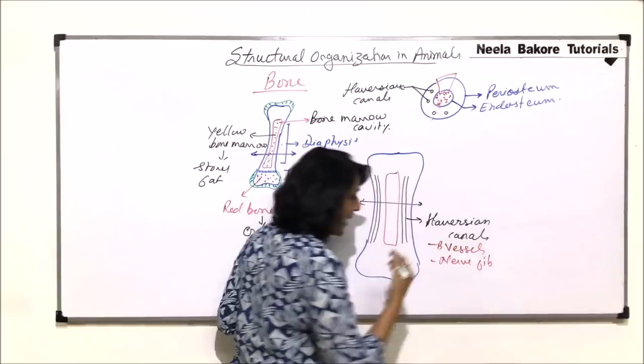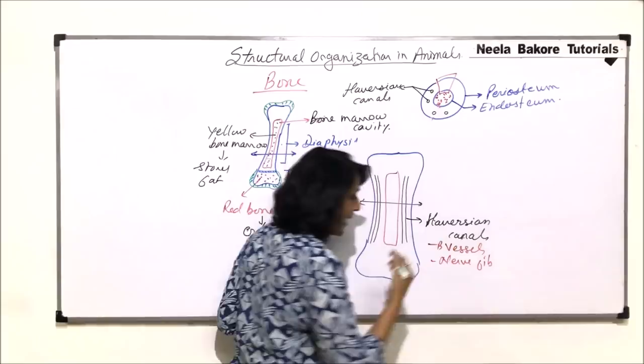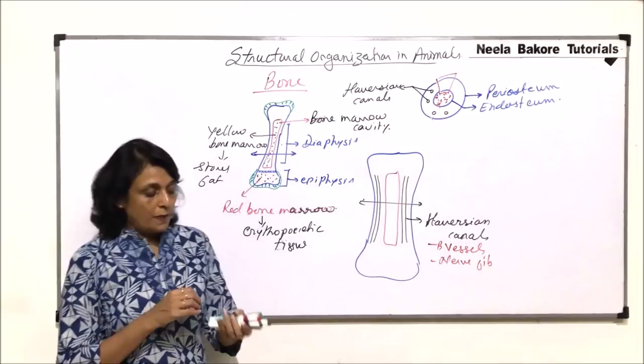Through this Haversian canal run blood vessels, nerve fibers, so that the cells which are in this compact region would get the nourishment.